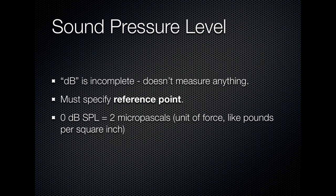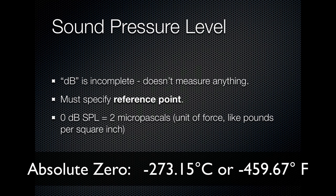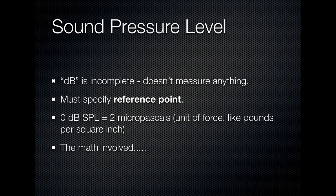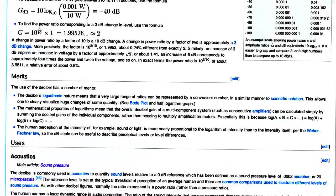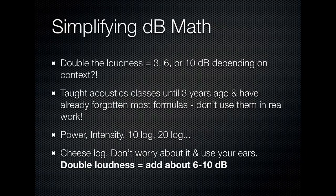Now, in order to have actually no sound at all, you couldn't have the air molecules moving at all, which means that the temperature would have to be absolute zero — which is a little chilly even in Minnesota. The trouble with all of this is that when you start getting into the math, it's awful. You don't ever want to get into the math of decibels — just don't worry about any of the math, use your ears. A good rule of thumb is that double loudness is adding around 6 to 10 dB, depending on the musical context.